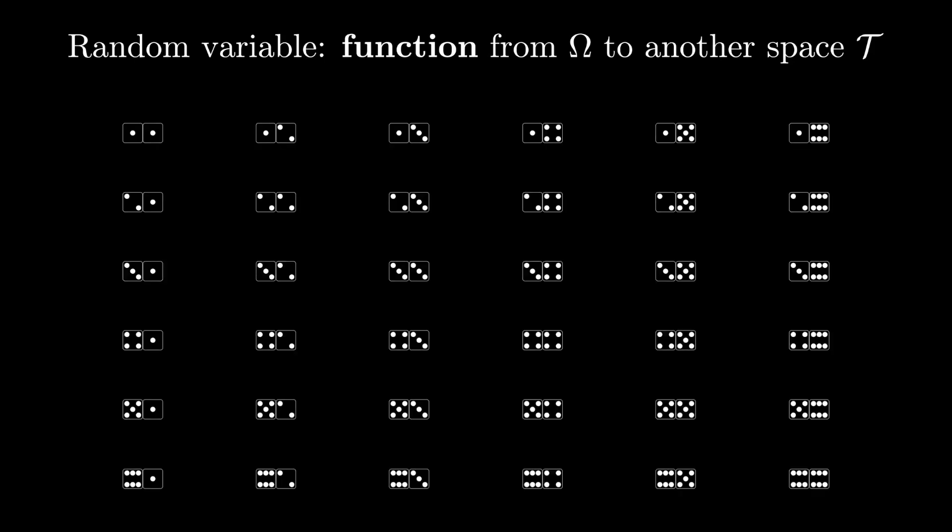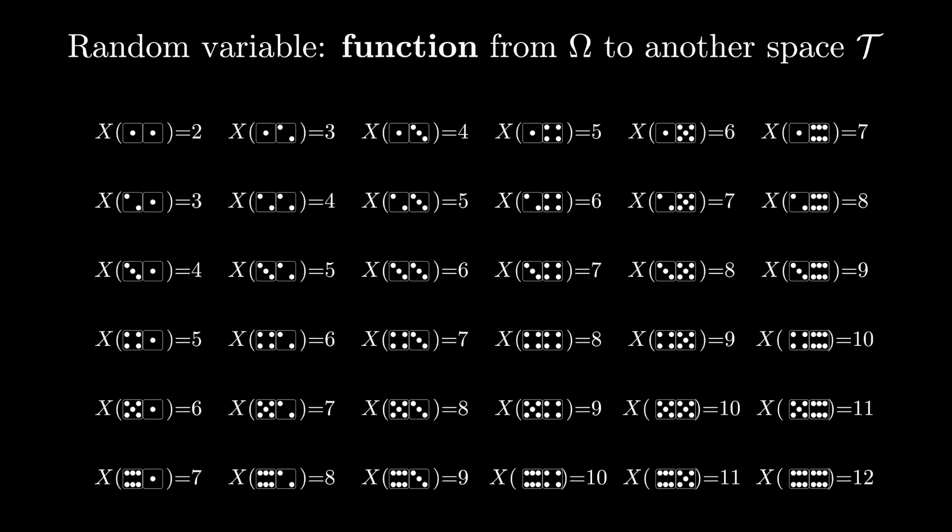If we go back to the case where omega is the set of all possible outcomes of two six-sided dice, then one random variable we might define is the sum of the dice. So here the set T is just the set of integers between 2 and 12.